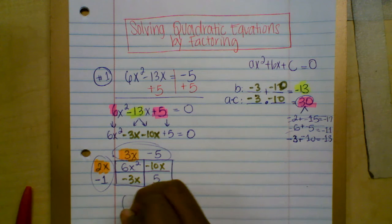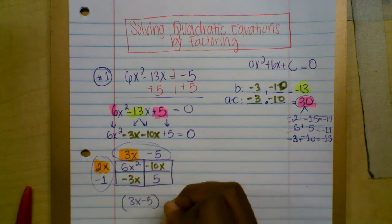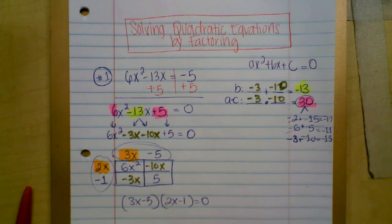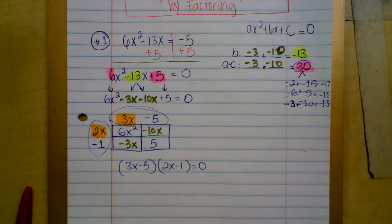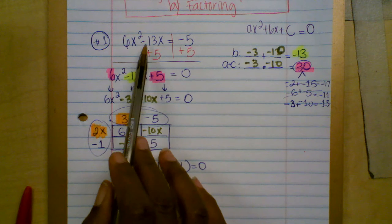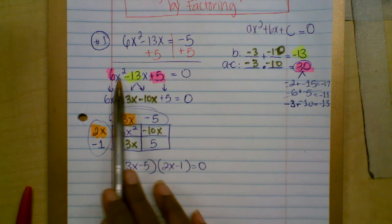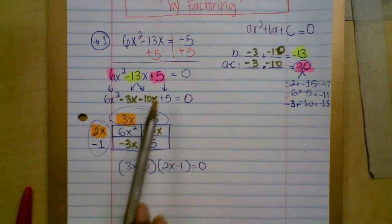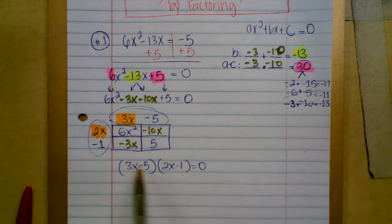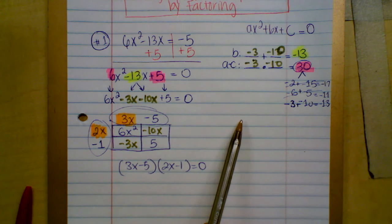The factor form is: (3x minus 5)(2x minus 1) equals zero. So we wrote the quadratic in standard form and factored it using the box method. Now let me also show you how to do it by grouping.